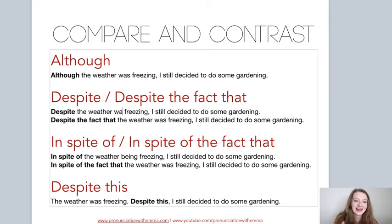Never say 'in spite of that the weather was freezing' — that doesn't work. 'Despite this' works slightly differently: you put it in between your two sentences. So you have your first sentence, full stop, then: 'The weather was freezing. Despite this, I still decided to do some gardening.' The meaning is exactly the same as despite and in spite of, but despite this goes in the middle of those two sentences: first sentence, full stop, despite this, comma, second part.